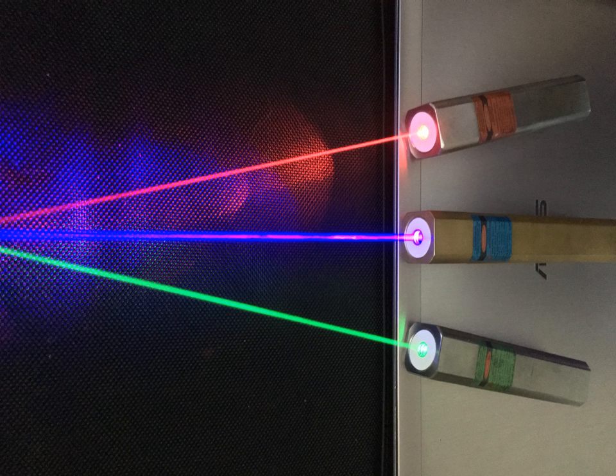Some higher powered laser pointers project a visible beam via scattering from dust particles or water droplets along the beam path. Higher power and higher frequency green or blue lasers may produce a beam visible even in clean air because of Rayleigh scattering from air molecules, especially when viewed in moderately to dimly lit conditions.